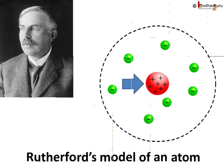So he concluded, nearly all the mass of atom resides in the center, which is positively charged. It's the nucleus. Negatively charged electrons revolve around the nucleus, and the size of the nucleus is very small compared to the size of the atom.